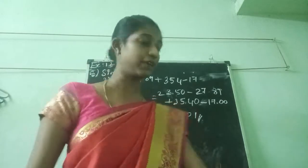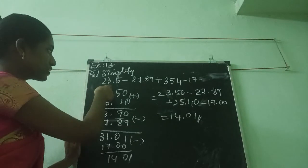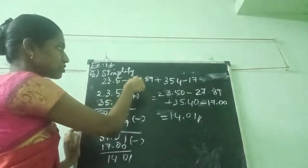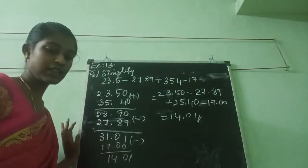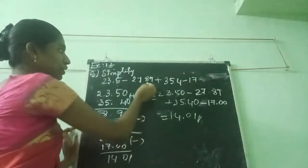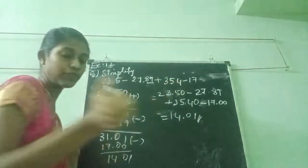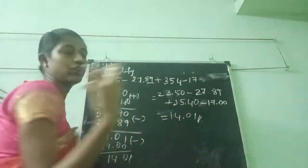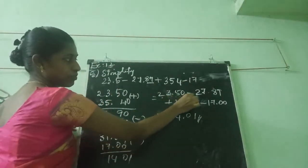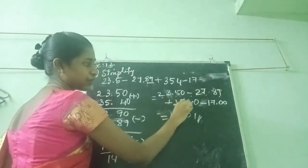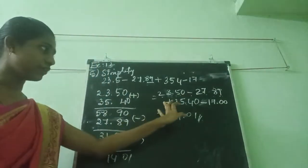In the 5th sum they have given: simplify. The question is 23.5 minus 27.89 plus 35.4 minus 17. Like this they are given. Now we are going to see. In the right hand side they are given 2 decimal numbers; here they are given 1 number; here they did not give any number. That means we want to put 0.